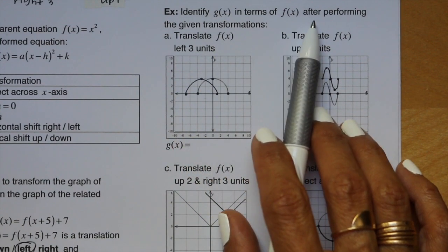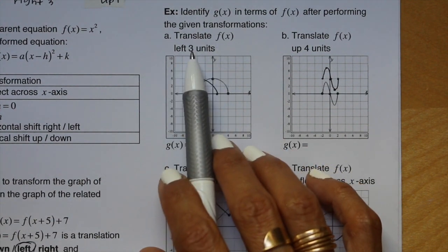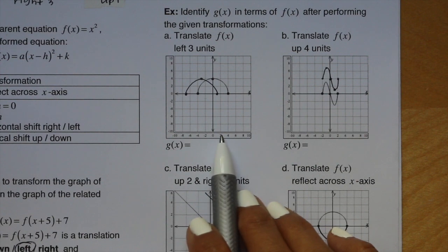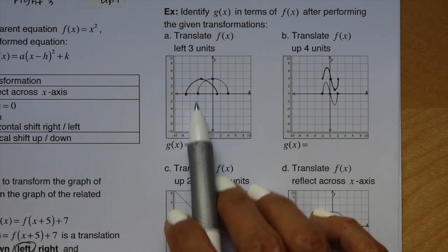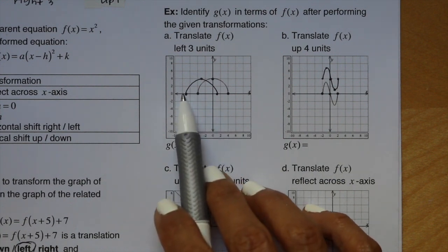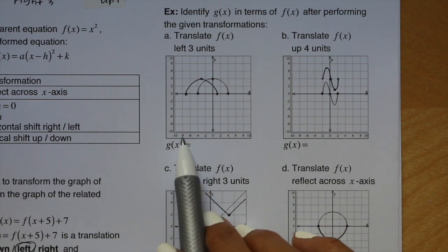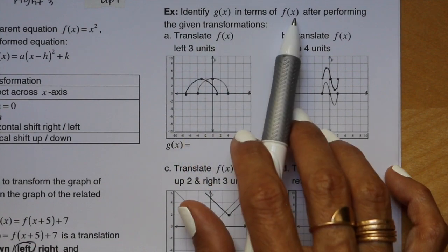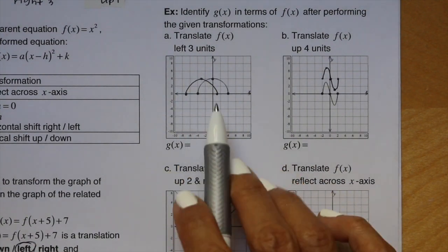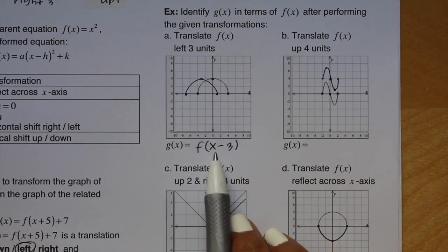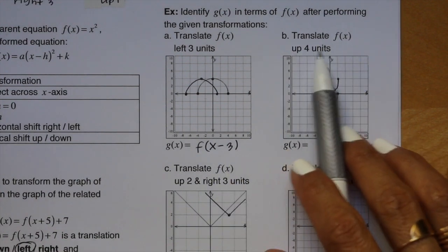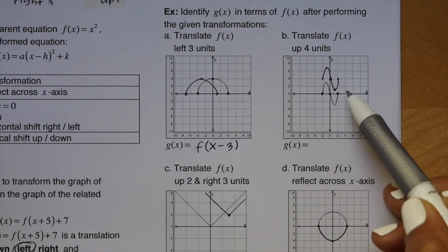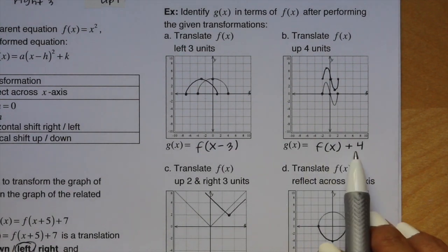This example says: identify g of x in terms of f of x after performing the given transformations. Part A says translate f of x left 3 units. The original graph is a semicircle. The graph is labeled by 2's. The first point starts at negative 4; moving left 3 makes it negative 7. The other point started at 4 and moves to 1. Draw your half circle. Since we moved left, the 3 goes inside the parentheses but opposite: g of x equals f of (x minus 3). Part B says translate f up 4 units, giving g of x equals f of x plus 4.